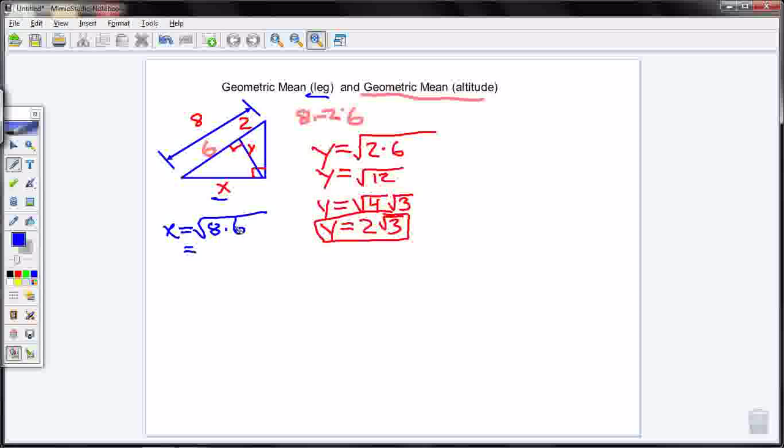Now, I can break these apart. Or I can combine them. Let's go ahead and combine them. What's eight times six? Eight times six is 48. So I have the square root of 48.